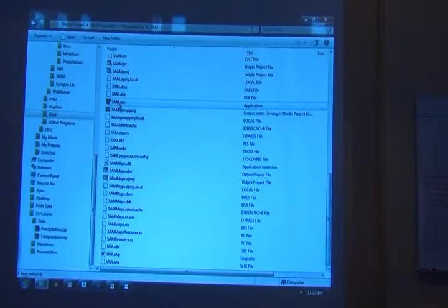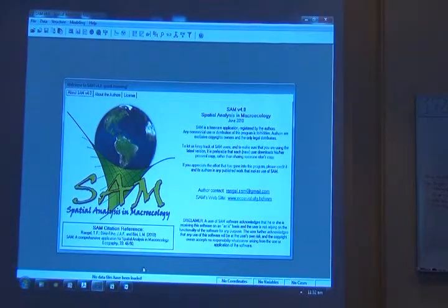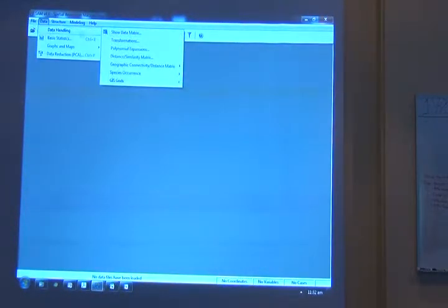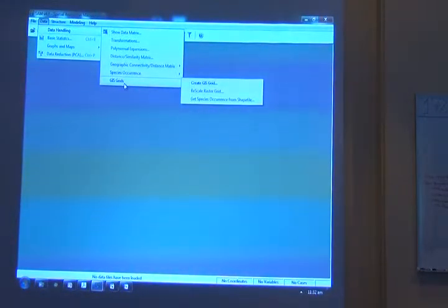So here I'm starting from scratch. There's no variable, nothing, no data. I can go to data, data handling, GIS grids. You better just watch that than taking notes. It's all written in the tutorial with much more detail and time than I have. So create a GIS grid.